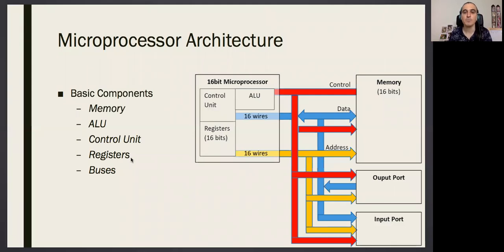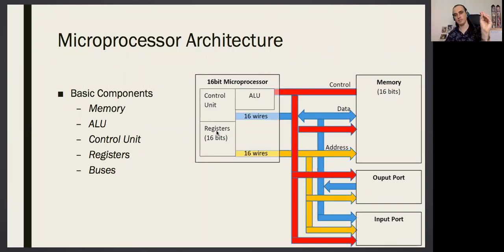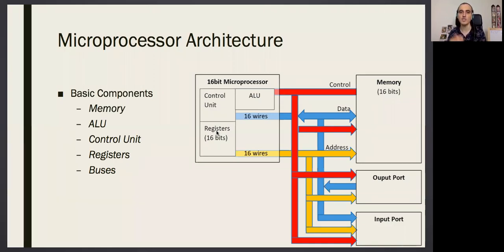Registers are like memory — they are cells where you can keep information. When I say information, it is zeros and ones, bits. In your desktop computer you have a hard disk and you have memory. The hard disk is for keeping very large amounts of information, while memory is what you are currently working with.